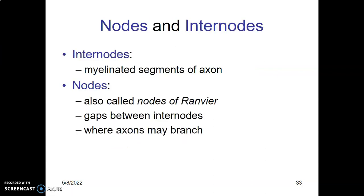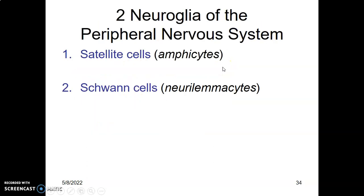When an axon is myelinated, some portions are myelinated and some are not, which is how we have internodes. The internodes are the myelinated segments, while the nodes of Ranvier are the gaps between the internodes. At the nodes of Ranvier there's no myelination, but within the internodes there is myelination.